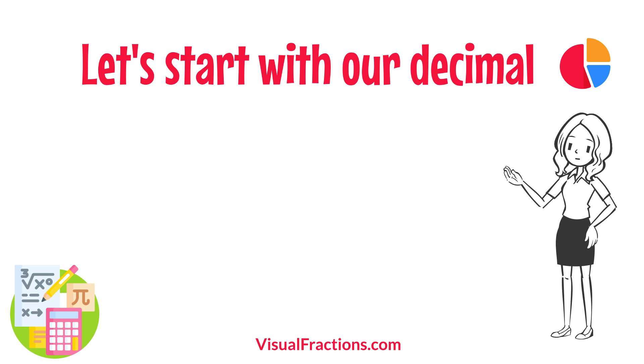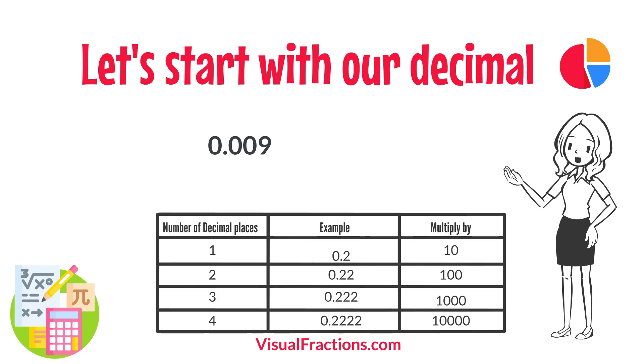Let's start with our decimal, 0.009. Notice there are three digits to the right of the decimal. This places it in the thousandths position.